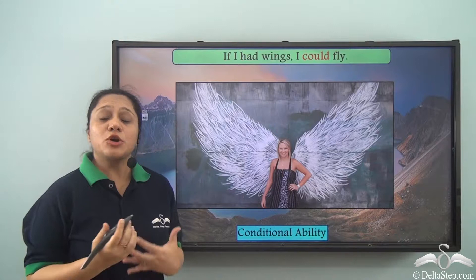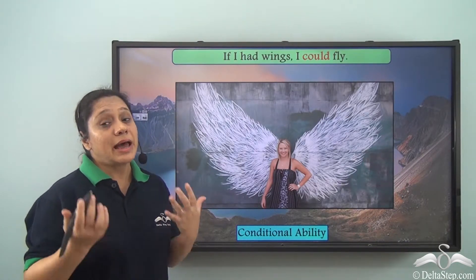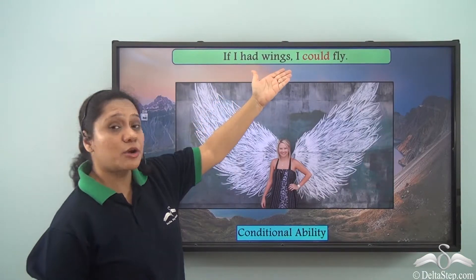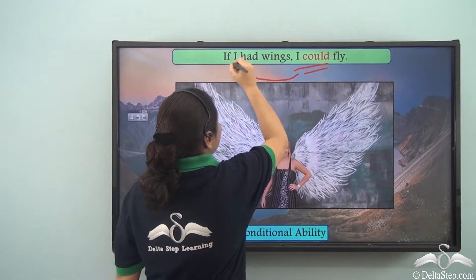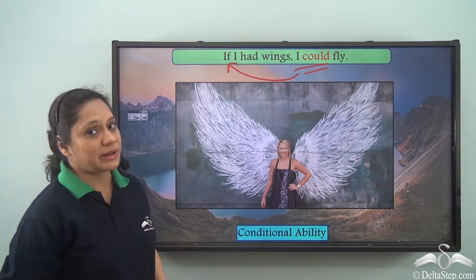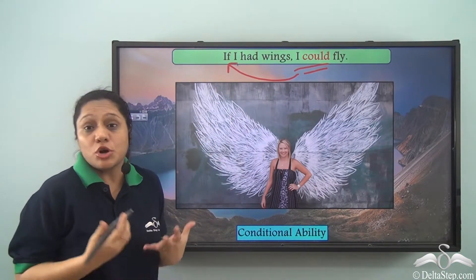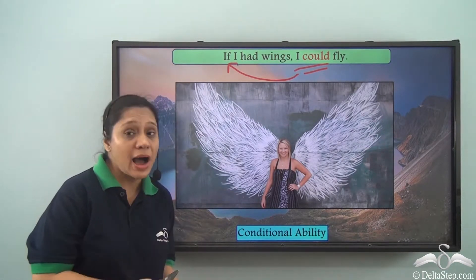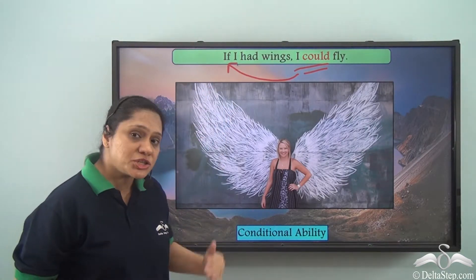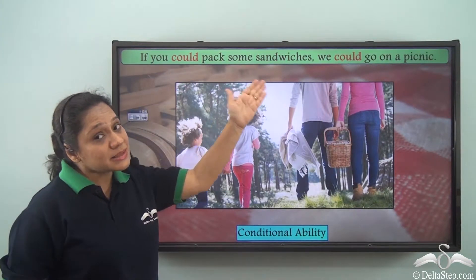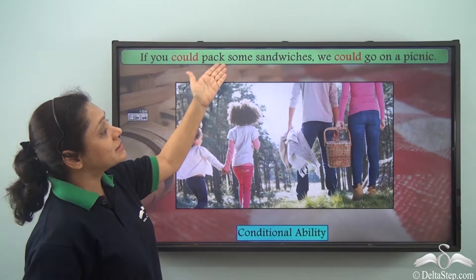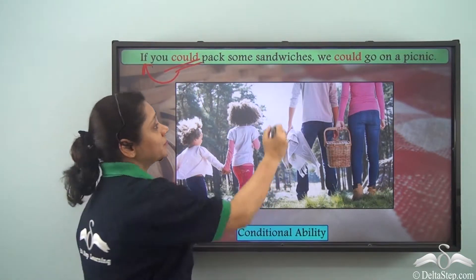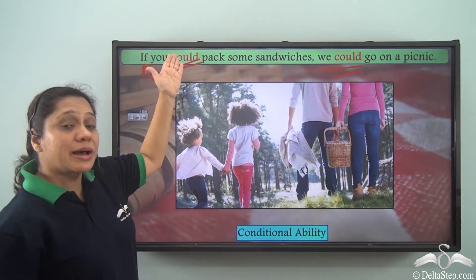Remember that could does not always necessarily mean ability in the past. For example, 'If I had wings, I could fly' — here, could along with if is showing a conditional ability. Similarly, 'If you could pack some sandwiches, we could go on a picnic' — could is working with if to show a conditional ability.